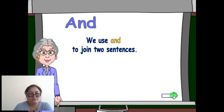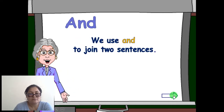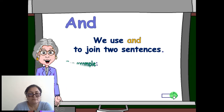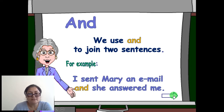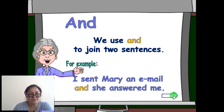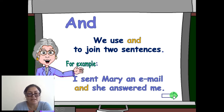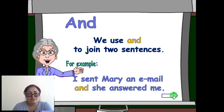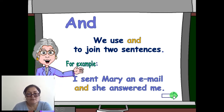We use 'and' to join two sentences. For example: 'I sent Mary an email and she answered me.' 'And' joins two independent clauses.